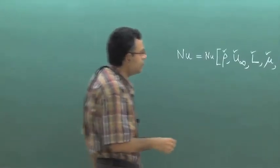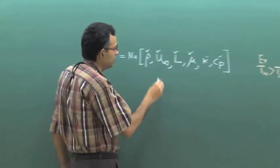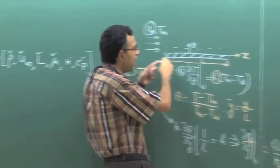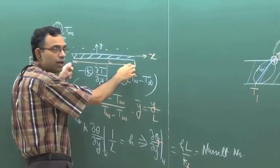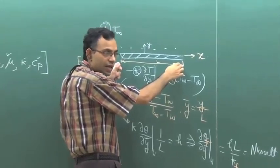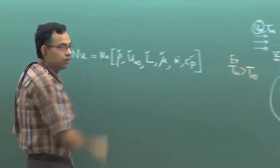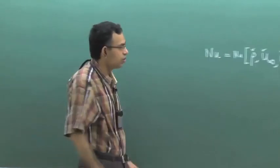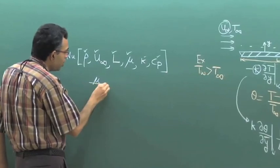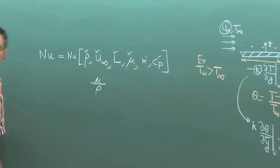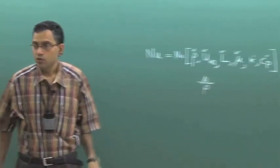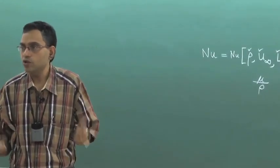The parameter u-infinity is one very important parameter. L is of course important because the entire characteristic length scale of the problem is governed by L. For μ and ρ, what matters is not μ or ρ individually, but their combination μ/ρ, which is known as kinematic viscosity.